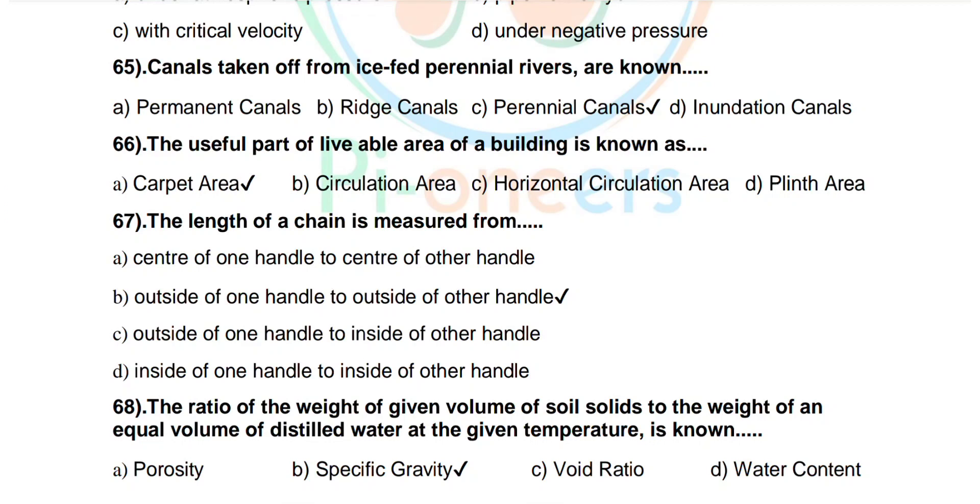Question number 67: The length of a chain is measured from center of one handle to center of other handle, outside of one handle to outside of other handle, outside of one handle to inside of other handle, or inside of one handle to inside of other handle. Correct answer: outside of one handle to outside of other handle.